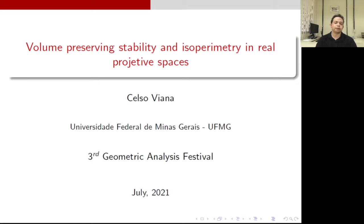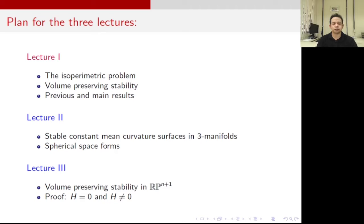The main theme for this mini-course will be classifying constant mean curvature hypersurfaces in terms of their index of stability. Our main goal is to use that classification as an approach to the classical isoperimetric problem in very interesting spaces. In lecture one, which is this video, I will introduce the question of isoperimetry, the definition of volume preserving stability, and discuss some previous results related to this problem.